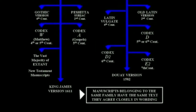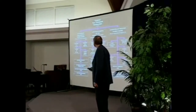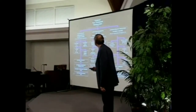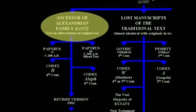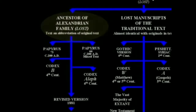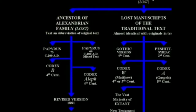Manuscripts belonging to the same family have the same text — they all agree closely in the wording. Then there's another tree, which is the ancestor of the Alexandrian family. And the original is also lost, of course.